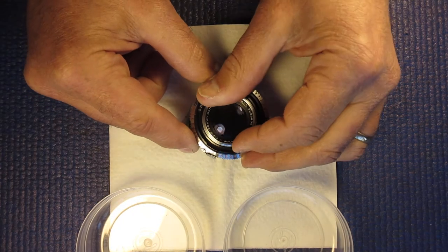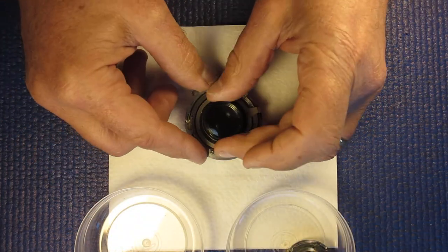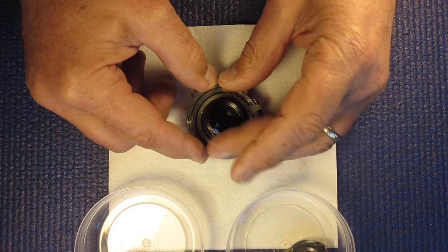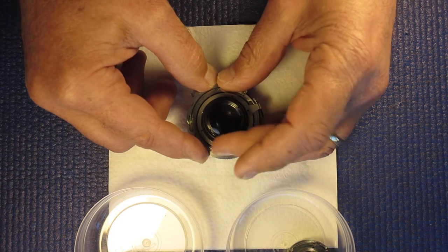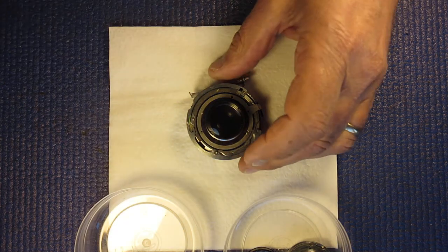So first the lens just bayonets in the front component. I'll remove the retainer ring that I put back on here for safekeeping after I'd taken it off the camera.